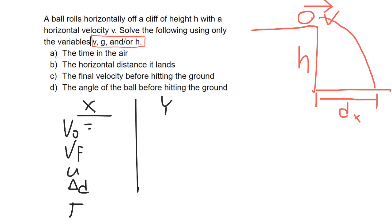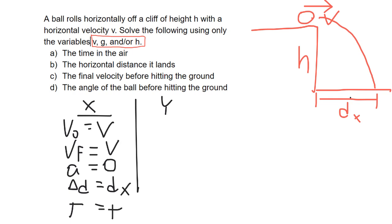In the X direction, our V initial is simply V — instead of plugging in numbers, we're just going to plug in variables. Our V final: since it's horizontal, once it's in the air there's no horizontal acceleration, so V final in the X direction is also V. The displacement is what we're looking for, so we'll call that DX. Time we don't know — we'll call that T. In the Y direction, our V initial is zero since the problem says the ball moves only horizontally.